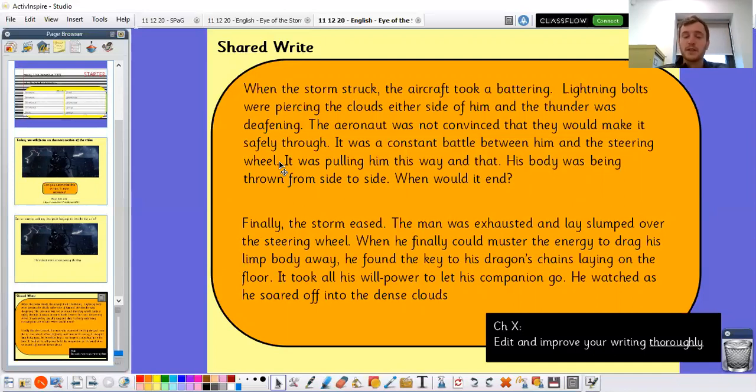Next paragraph. Finally, the storm eased. The man was exhausted and lay slumped over the steering wheel. When he could finally muster the energy to drag his limp body away, he found the key to the dragon's chains laying on the floor.